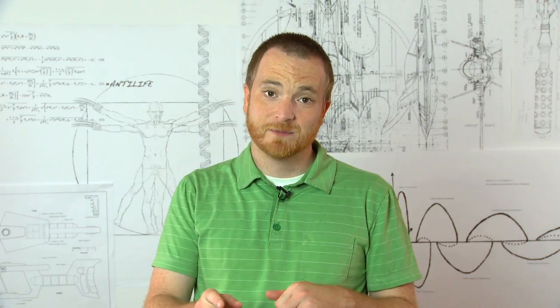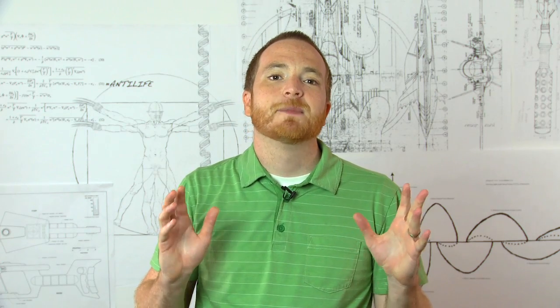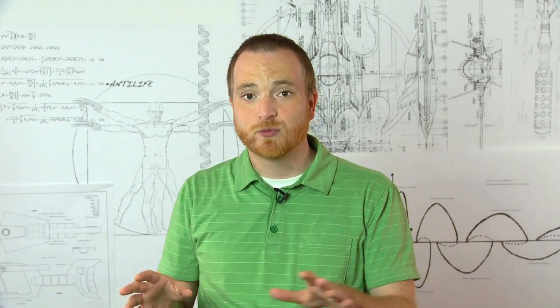Well, sharks can. They have an organ called the ampullae of Lorenzini. This organ allows them to detect the electromagnetic fields of the objects around them. They can sense great disturbances like a ship with a large magnetic field moving through the water, or small ones like a fish that's about to become lunch.